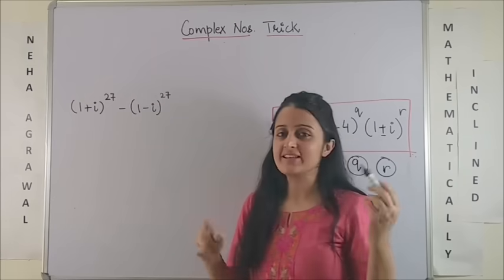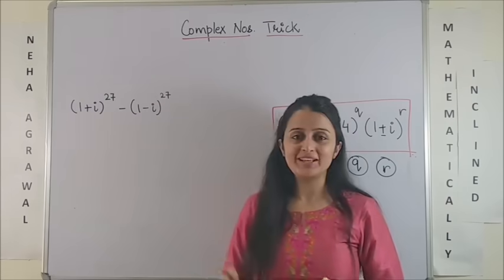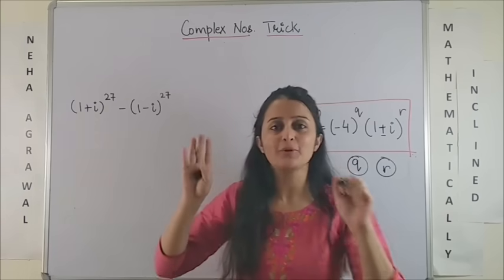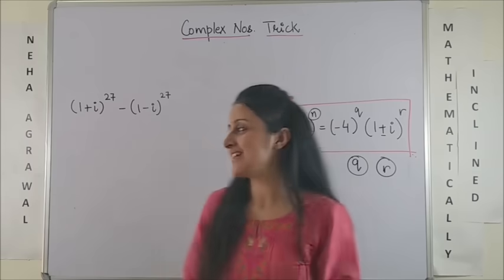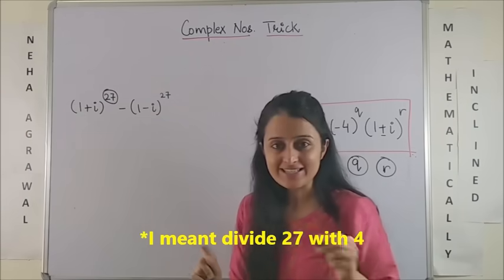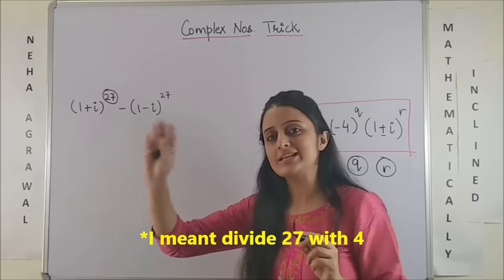Now look at 1 plus iota raised to power 27 minus 1 minus iota raised to power 27. Now you could be given any different numbers also, but the formula would stay the same. So here, this one, now again if I divide this with 27, I know 4 into 6 and the remainder would be 3.